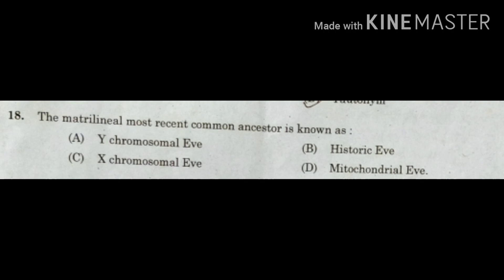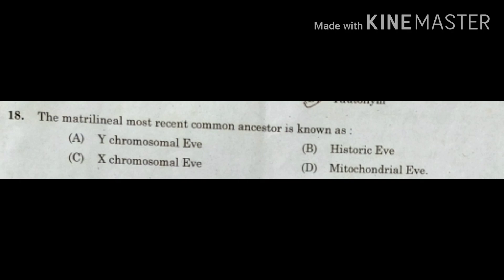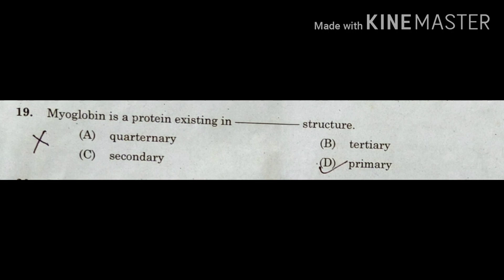The next question: the matrilineal most recent common ancestor is known as — option A: Y chromosomal Eve, B: historic Eve, C: X chromosomal Eve, D: mitochondrial Eve. In human genetics, mitochondrial Eve refers to the matrilineal most recent common ancestor (MRCA) of all currently living anatomically modern humans, estimated to have lived approximately 100,000 to 200,000 years ago. The correct answer is option D: mitochondrial Eve.